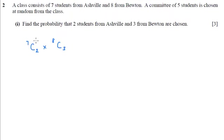Any of the combinations of the people from Asheville can be combined with anybody from Bewton. So that's why we're multiplying them. That would work out how many different committees we could make.